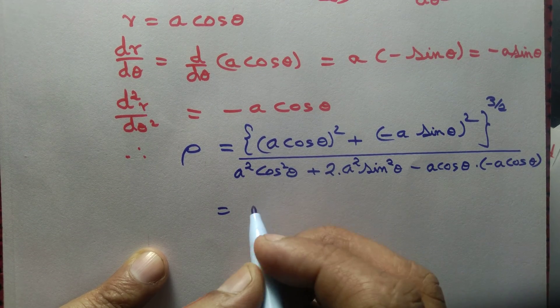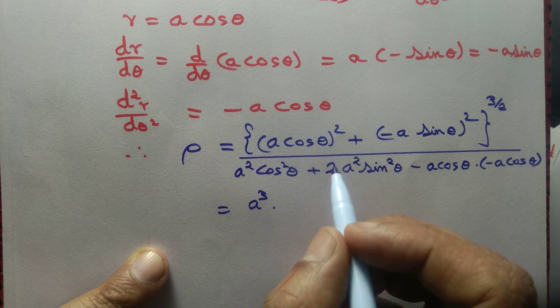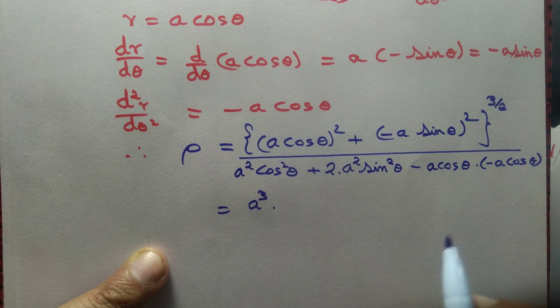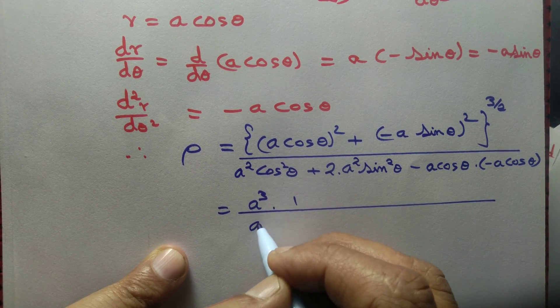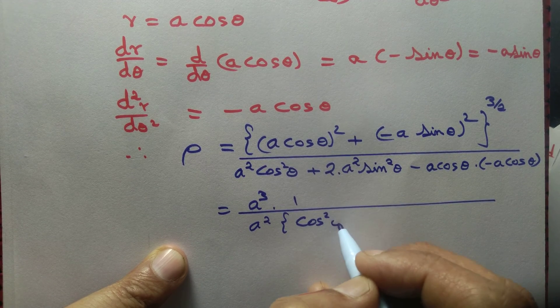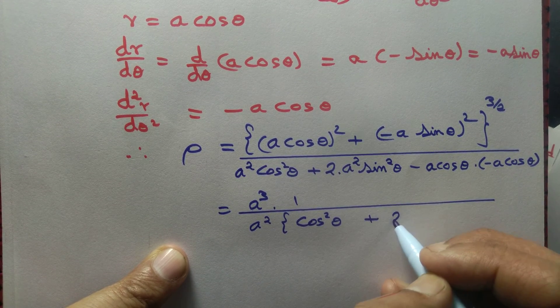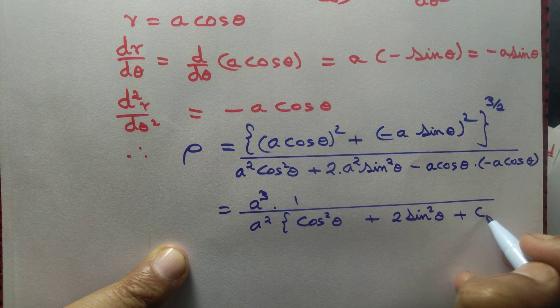Cos² plus sin² is 1, so just 1 in the numerator. In the denominator, we can take a² common: cos² theta plus 2 sin² theta, minus minus plus, so cos² theta.